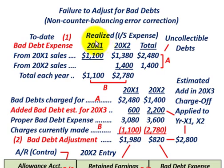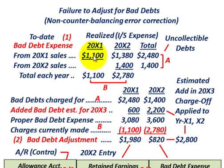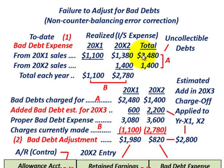Starting with what has already gone through our income statement as an expense and flowed into retained earnings: bad debt expense for 20x1 sales was $1,100 recognized in year 20x1, and then in year 20x2 for the 20x1 sales they had $1,380. So the total bad debt expense from sales made in 20x1 — summing years 20x1 and 20x2 — is $2,480, covering those uncollectible debts.